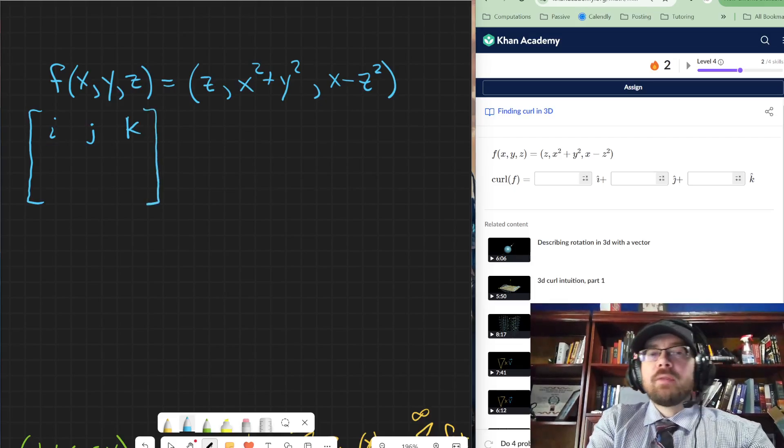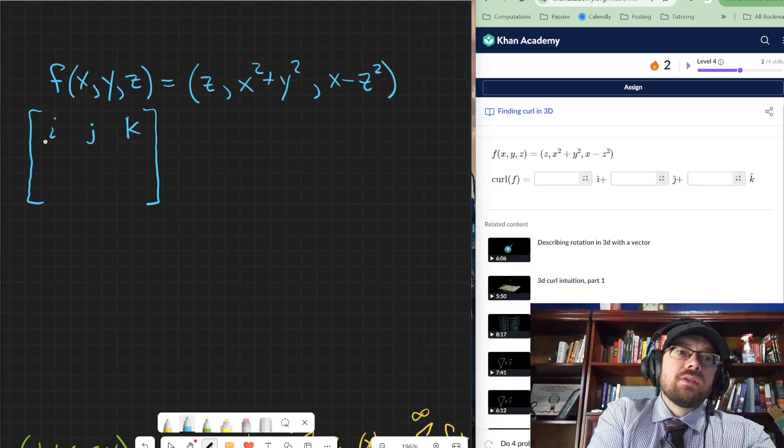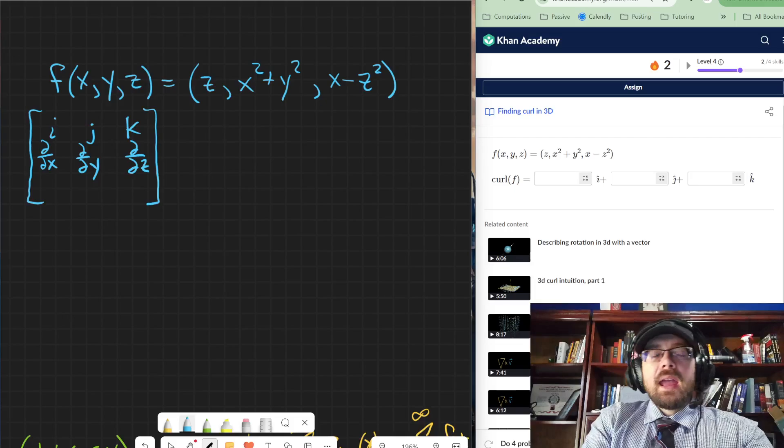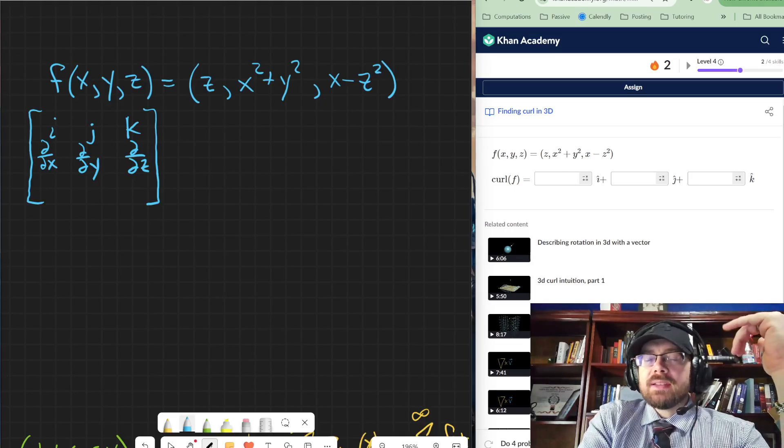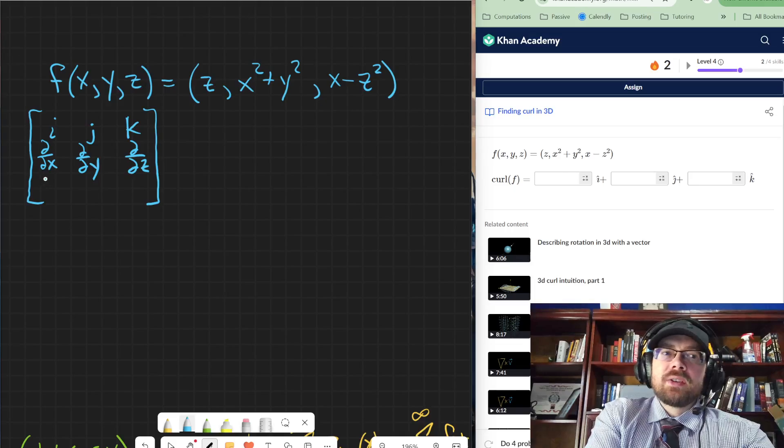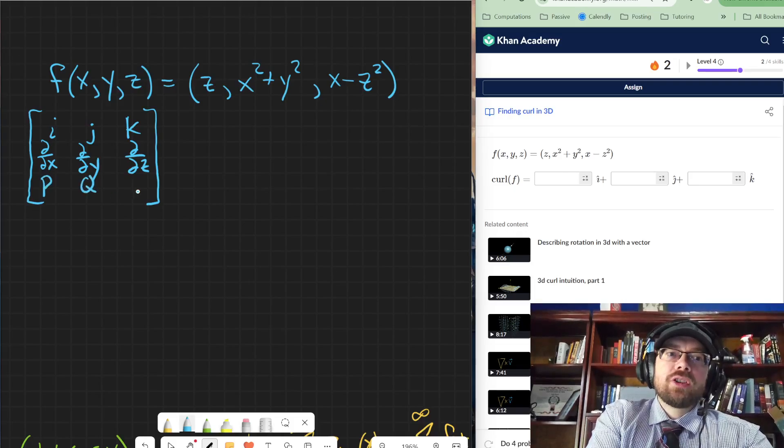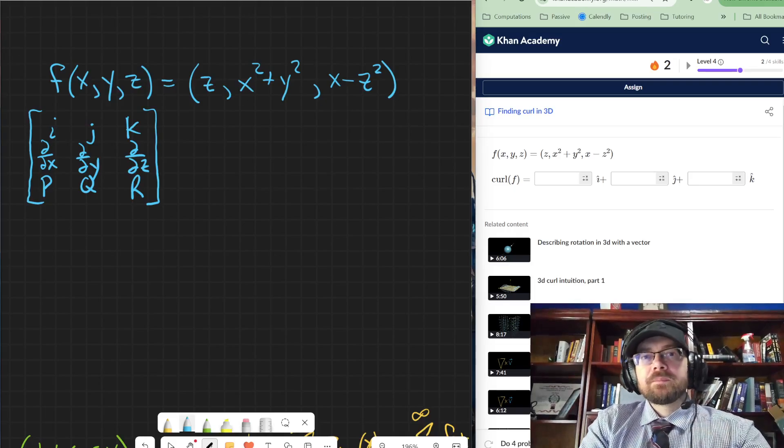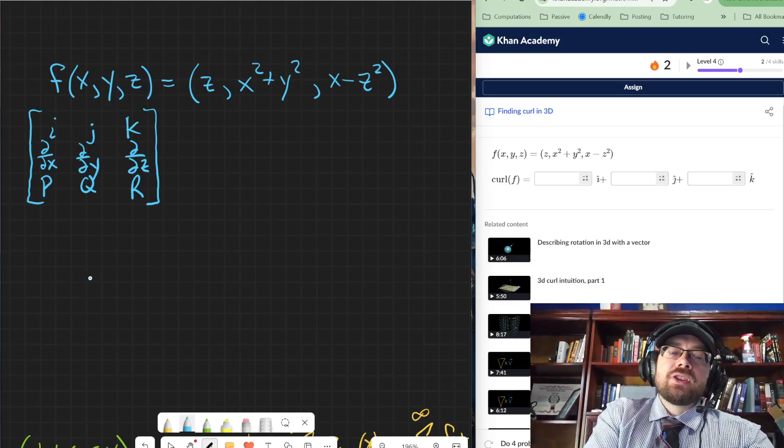And if you're finding the curl, it's what's the change in x, y, and z? So what's the partial derivative of x, y, and z? And for what? For all the different directions as well. So the x, y, and z direction, but also for the functions that determine x, y, and z direction as well. So let's say the p function, the q function, and the r function, so that we can figure out that curl.